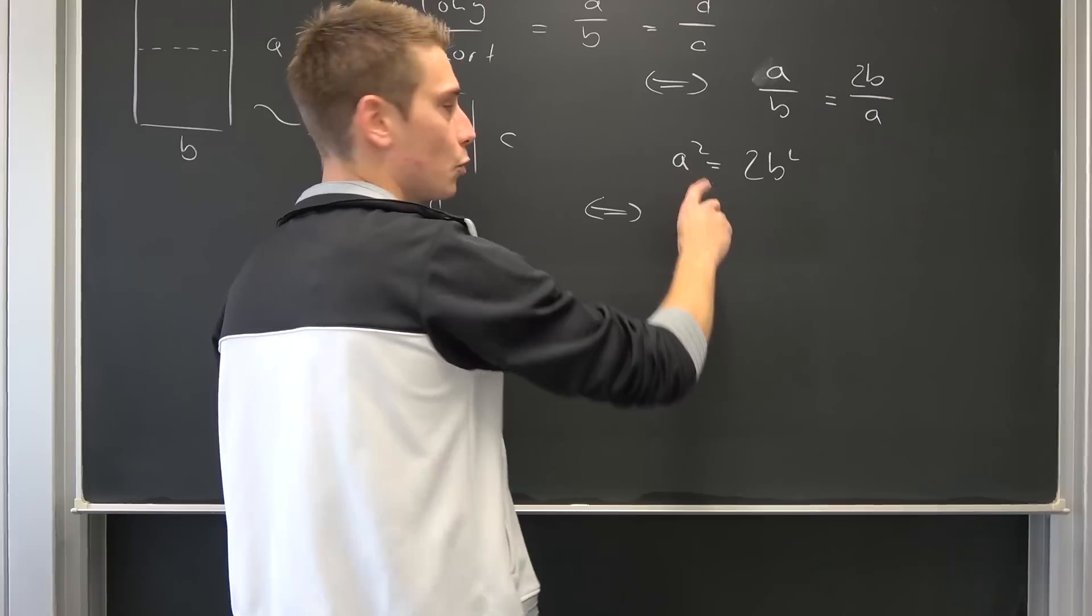And this is cool because now we can actually solve for our A's and B's. So we are going to have A squared being equal to 2 times B squared.